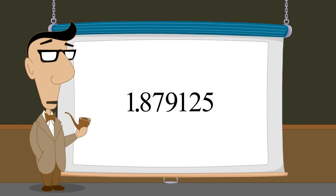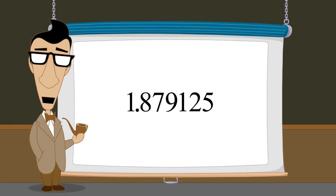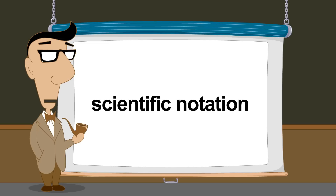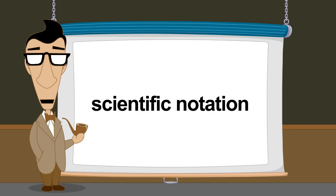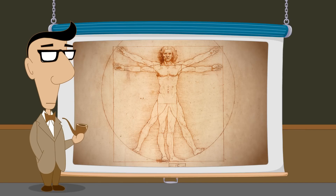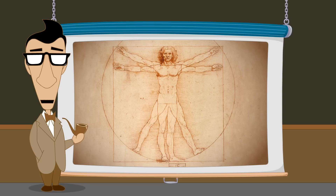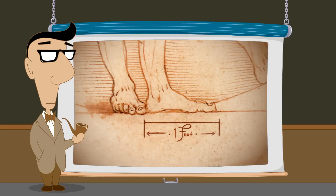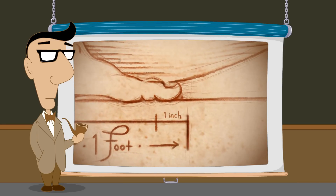Shifting the decimal point by multiplying by some power of ten is used by engineers and scientists to write numbers in a format called scientific notation. Many years ago, units of measurement such as feet, meters, miles, seconds, pounds, and so forth, were chosen to describe things on a human scale. Things which we encounter in our everyday lives can usually be expressed in these units without needing gigantic numbers or tiny fractions.